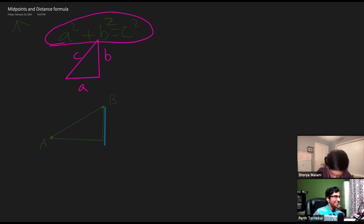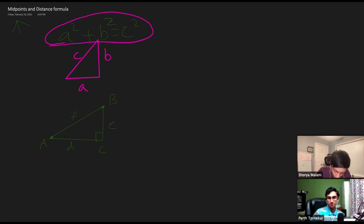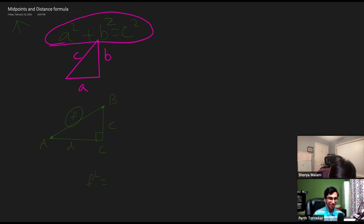So this will be corner c. These corners look a lot like the triangle we just drew. If we have side lengths d, e, and f, when we're looking for distance we're looking for f. So f squared equals d squared plus e squared. Now can we figure out what d and e are?